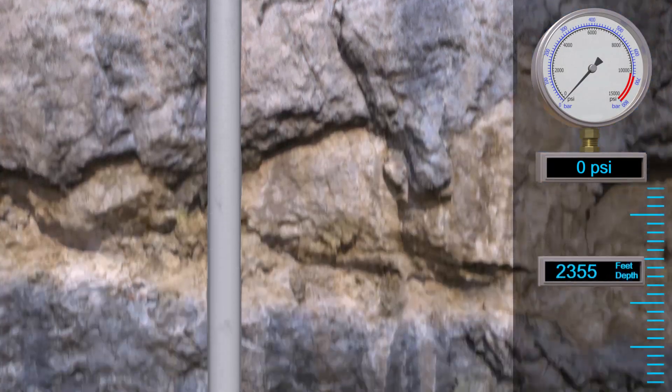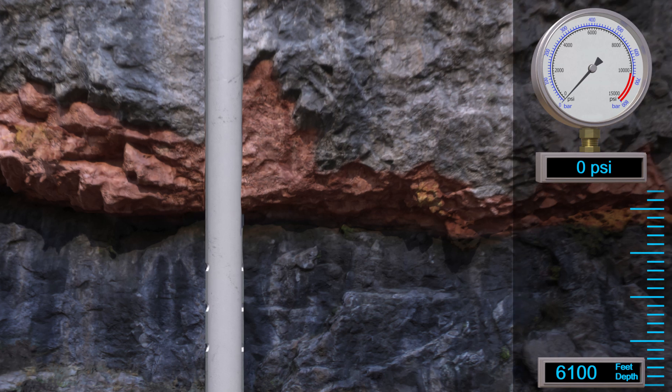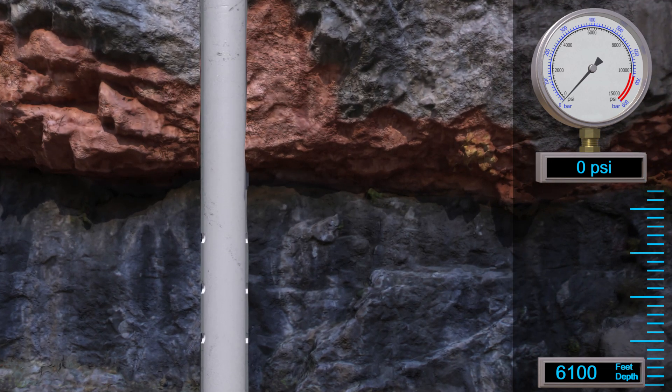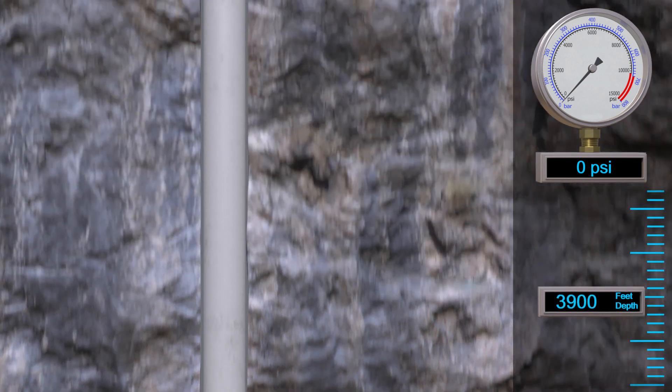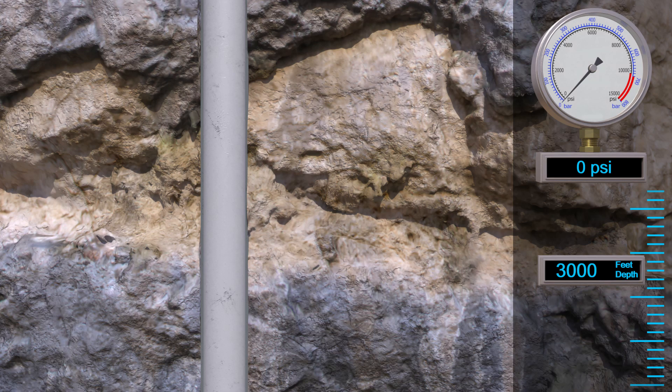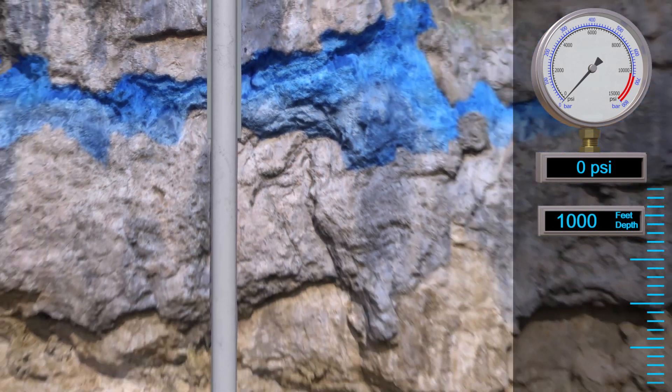This video is going to show a typical 6,100-foot deep oil well that needs to be plugged. This well needs the oil zone squeezed with cement, a balance plug across a gas zone, production casing perforated and cemented, and cement circulated at surface.